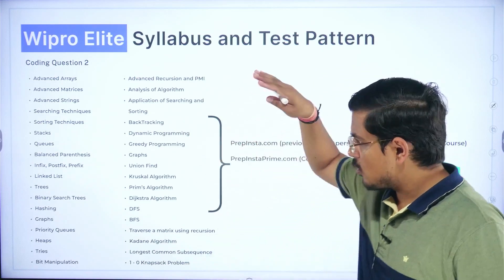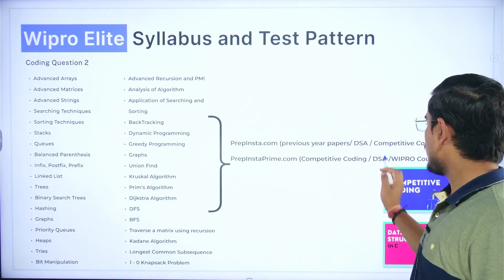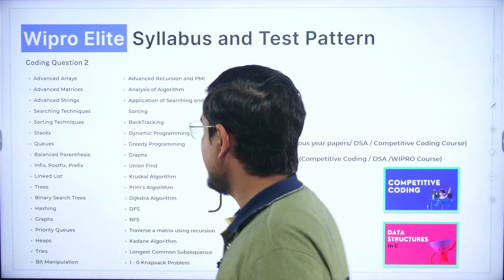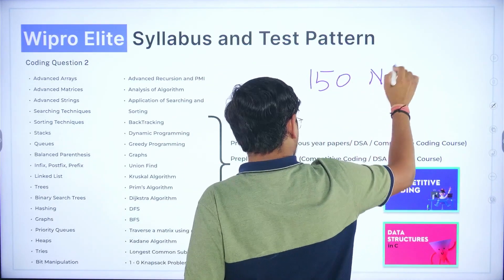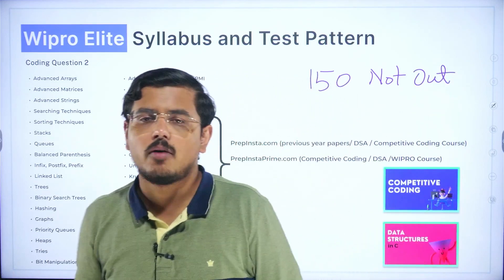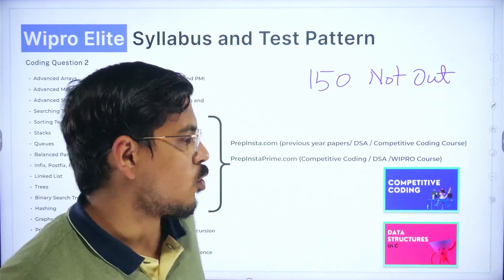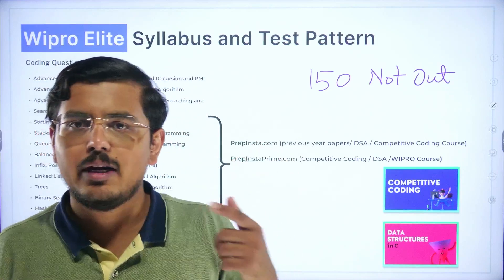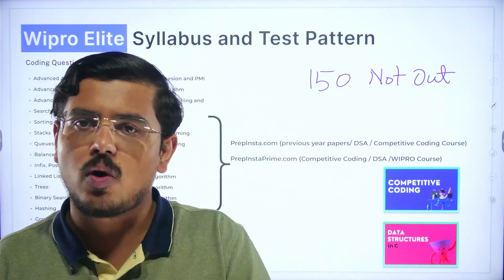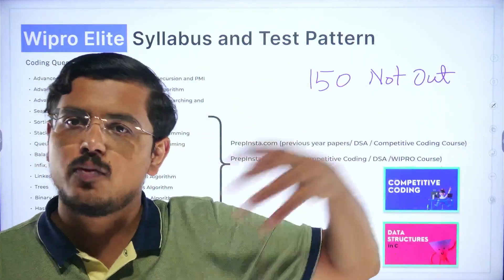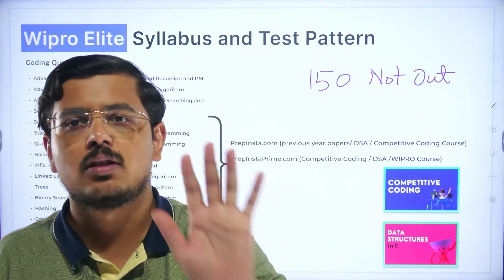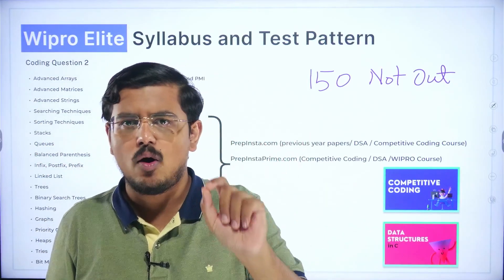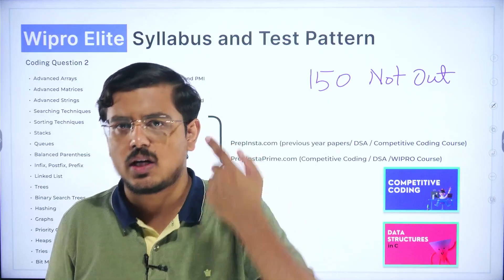If you want it to be structured for you, again Prime would house DSA courses with Wipro courses for you very smoothly. But if you're somebody who has to prepare it in free then buddy, 150 Not Out is for you. Why am I telling these free resources? The reason is some people might not afford this, some people might not be able to bag this opportunity to go ahead and save their time in PrepInsta Prime. At that point of time you'll need to spend extra effort, extra time, you'll have to do all the hard work again which we have already done for you on PrepInsta Prime.